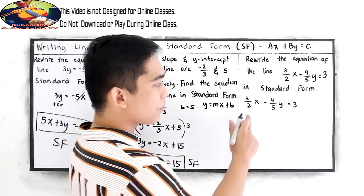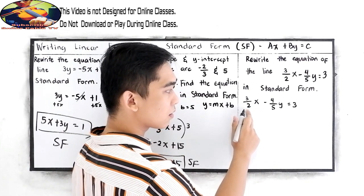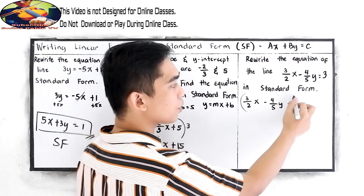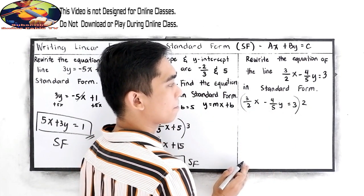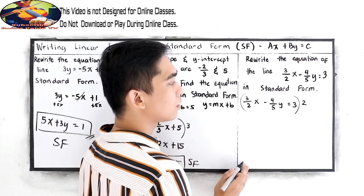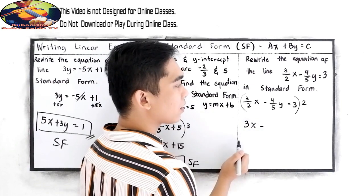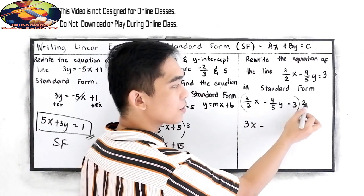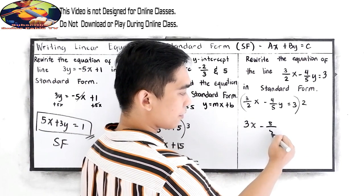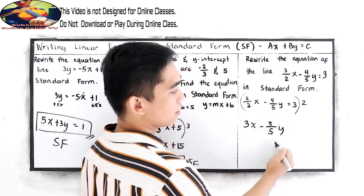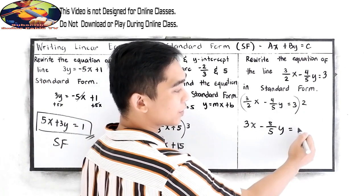We need to remove the denominator in our x term, so we multiply by 2. The 2s cancel, leaving 3x minus (4 times 2 is 8) 8/5 y = 3 times 2, which is 6.